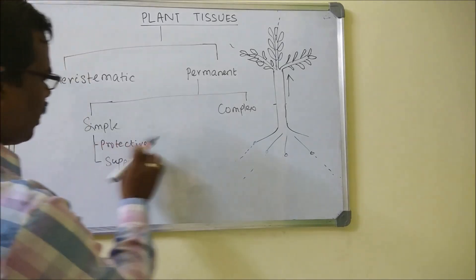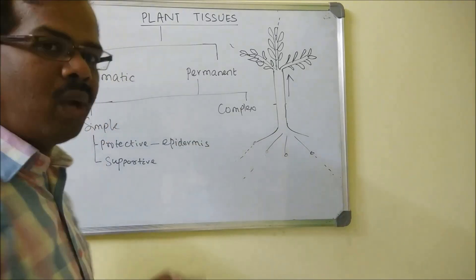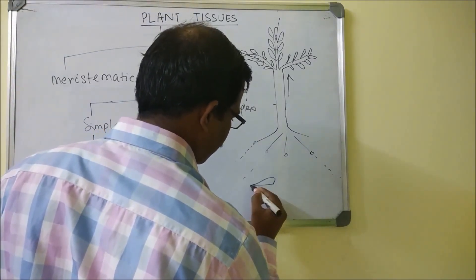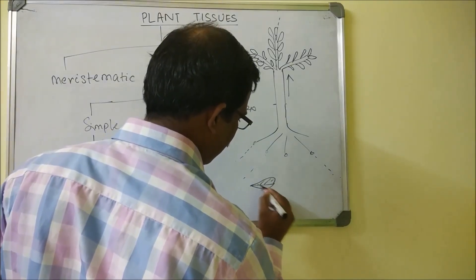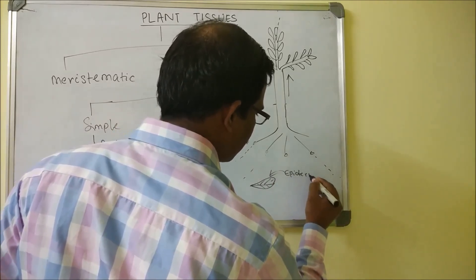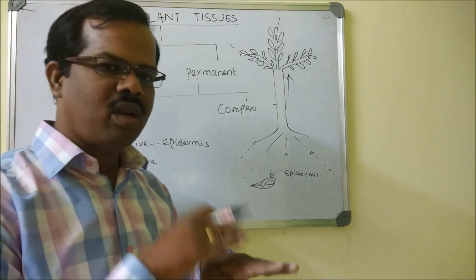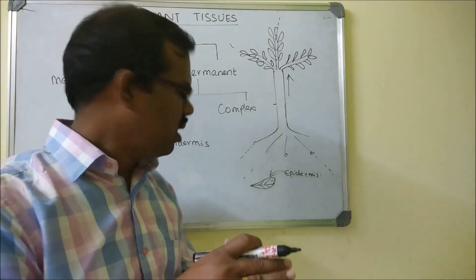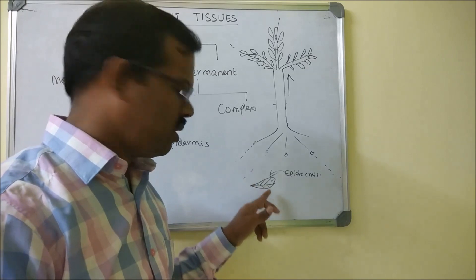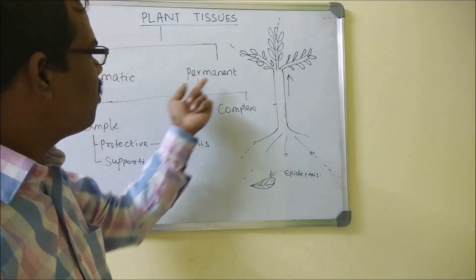Protective tissues are mainly found in the epidermis. For example, on top of a leaf, there is a shining material — that is called the epidermis. When you put a drop of water on the leaf, it does not stick; it floats and drains out. That smooth, topmost layer of the leaf is the epidermis, and it serves as protective tissue. These belong to the simple permanent tissue category.